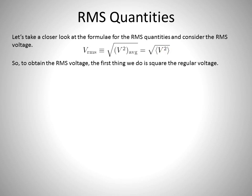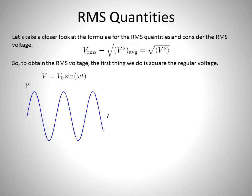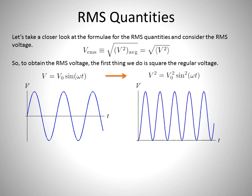So to obtain the RMS voltage, the first thing we want to do is square the regular voltage. So we start off with our regular voltage, and we square it. When we square the voltage, we'll notice that these peaks, these negative peaks, because they're squared, will become positive. We'll get something that looks still on a semi-close to a sinusoidal. It's actually a squared sinusoidal pattern.